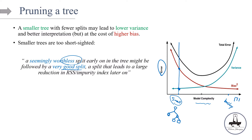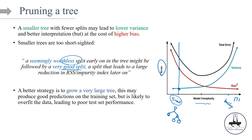So what's the solution? It seems that maybe a better strategy is to grow a very large tree. This may produce a good prediction on the training set. However, it is likely to overfit the data, and that leads to poor test set performance. We know that if the tree is very bushy, maybe the bias is small, but the variance is going to be large in the test set, and overall the total error is going to be large.